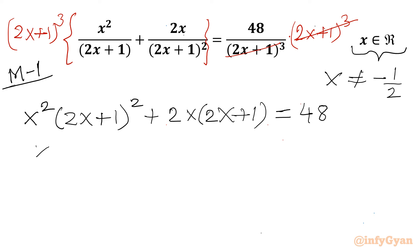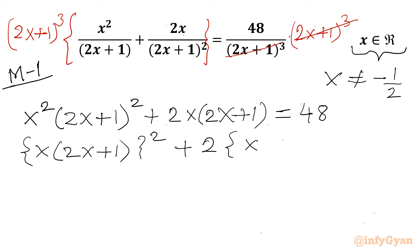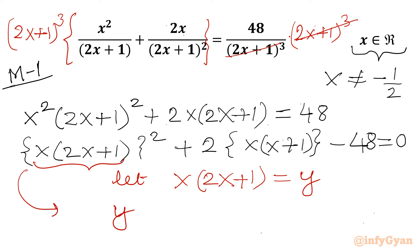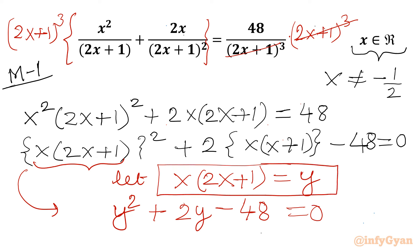I will rewrite this as x(2x+1)² + 2·x(2x+1) - 48 = 0. Now if I consider the curly bracket expression, let x(2x+1) = y. Then our equation becomes y² + 2y - 48 = 0. Remember this substitution — we will use it a little later.